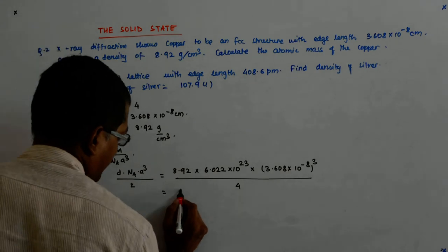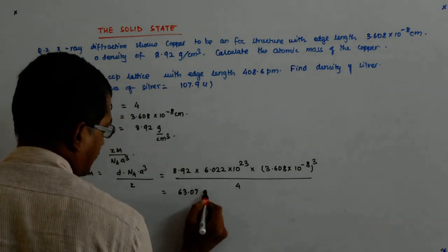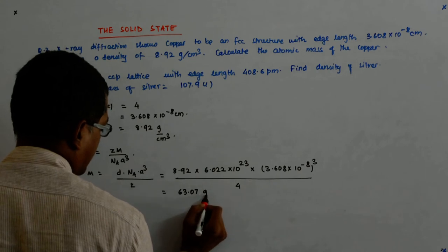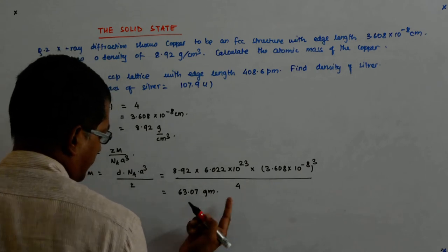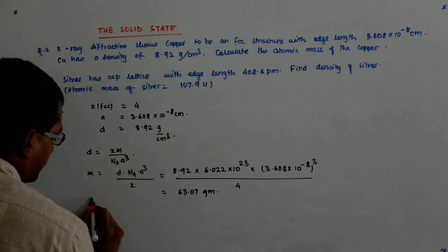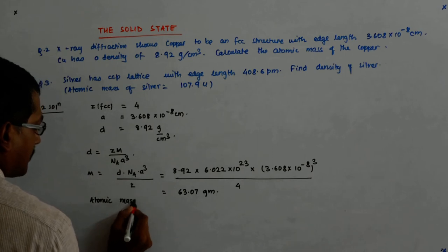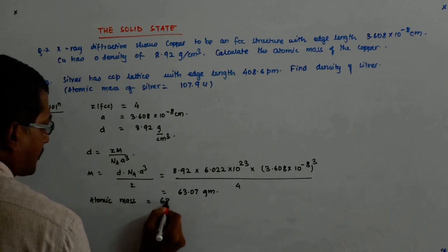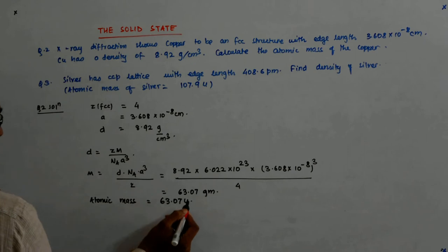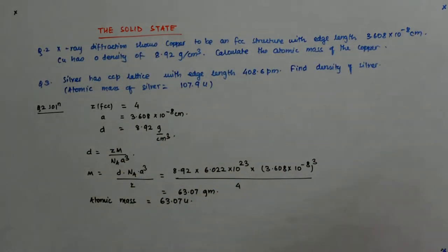So, that is 63.07 grams. Atomic mass is, if you want the mass of one atom, that is 63.07u, correct? We get the point.